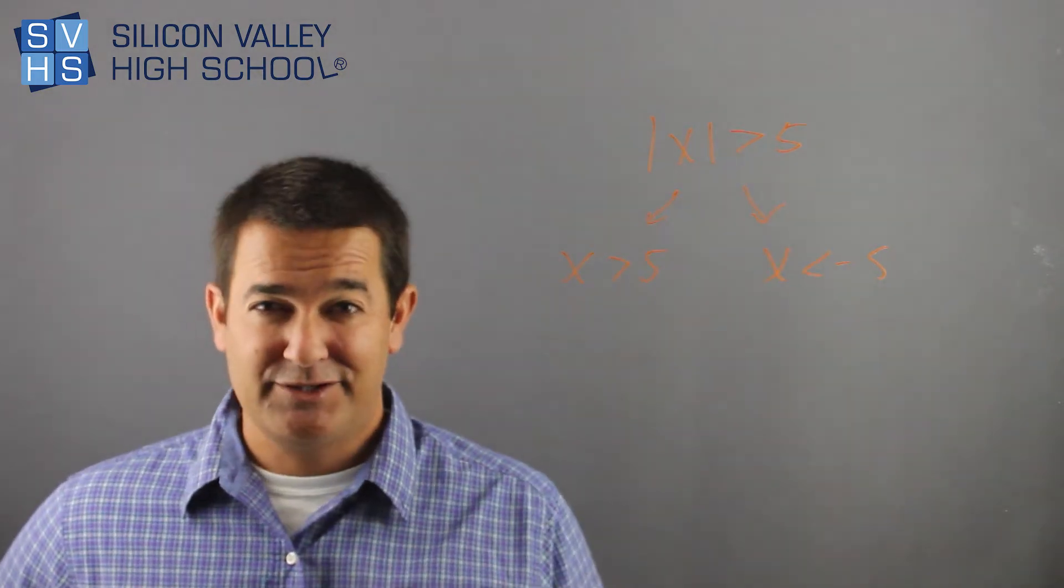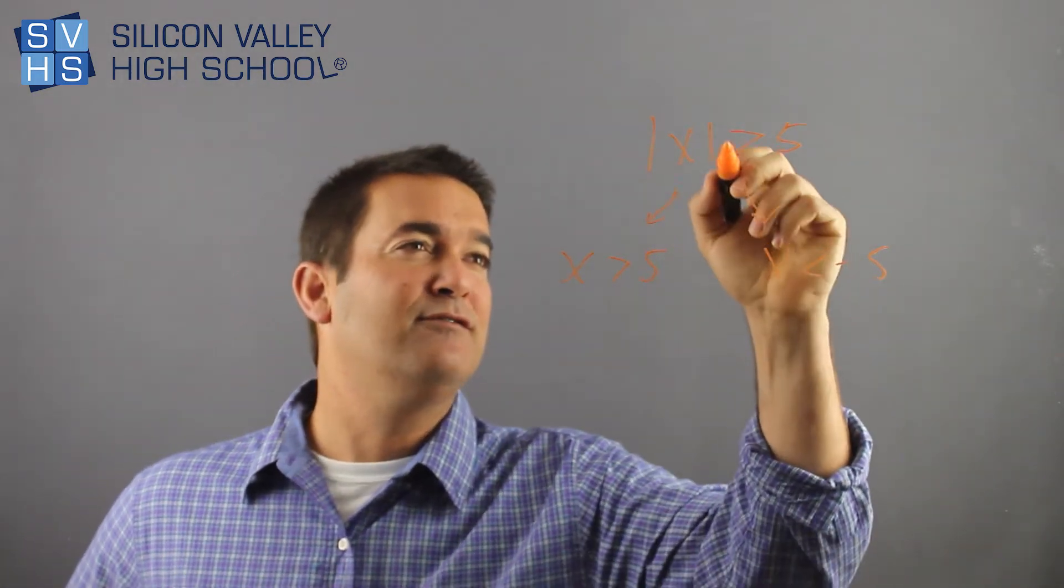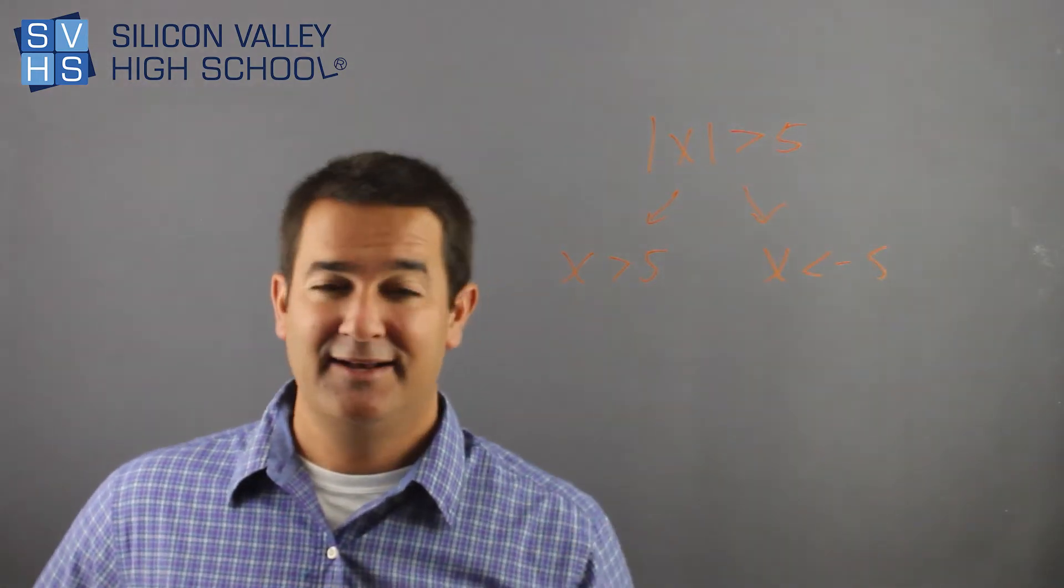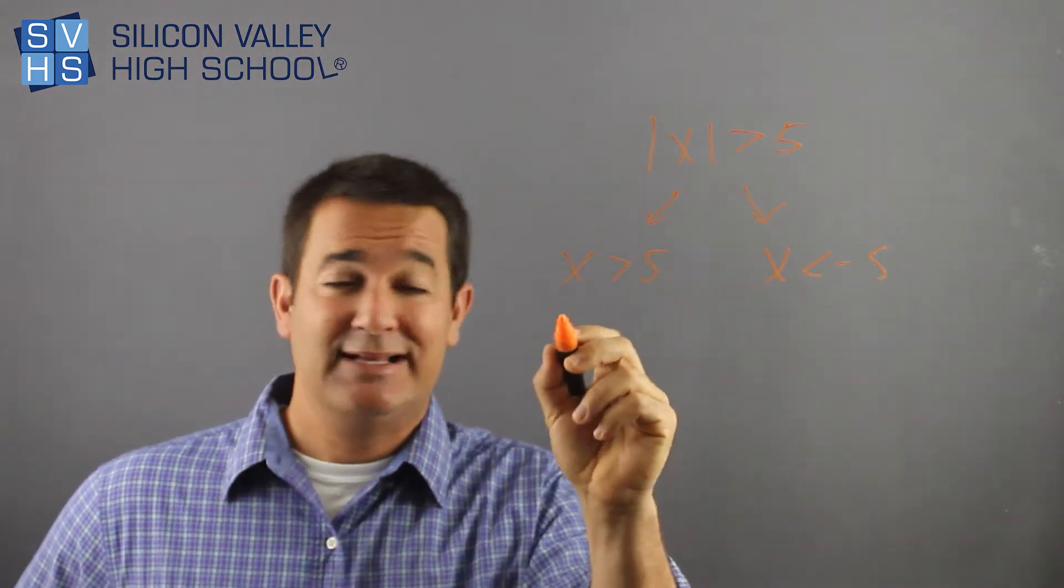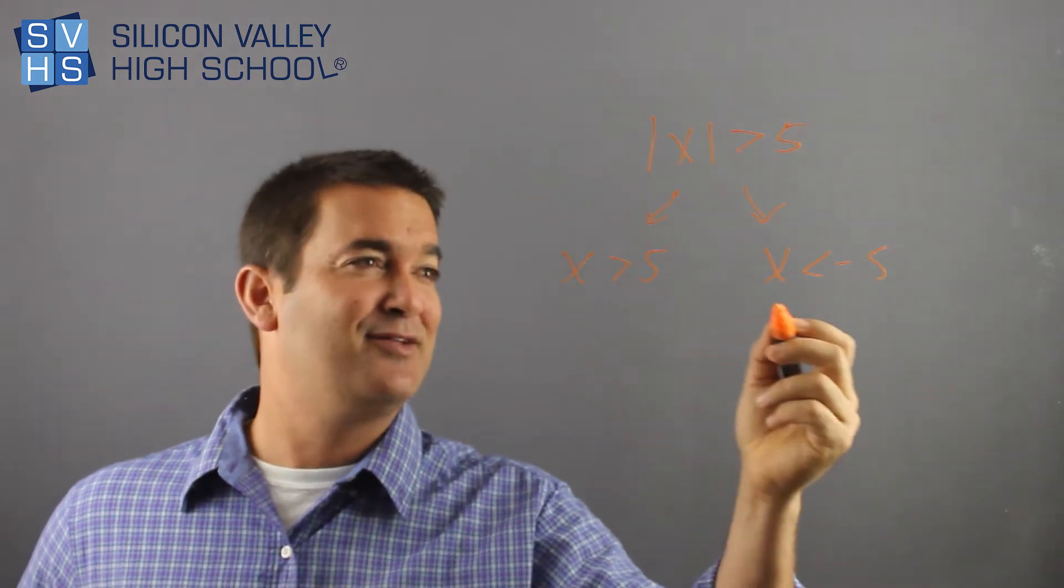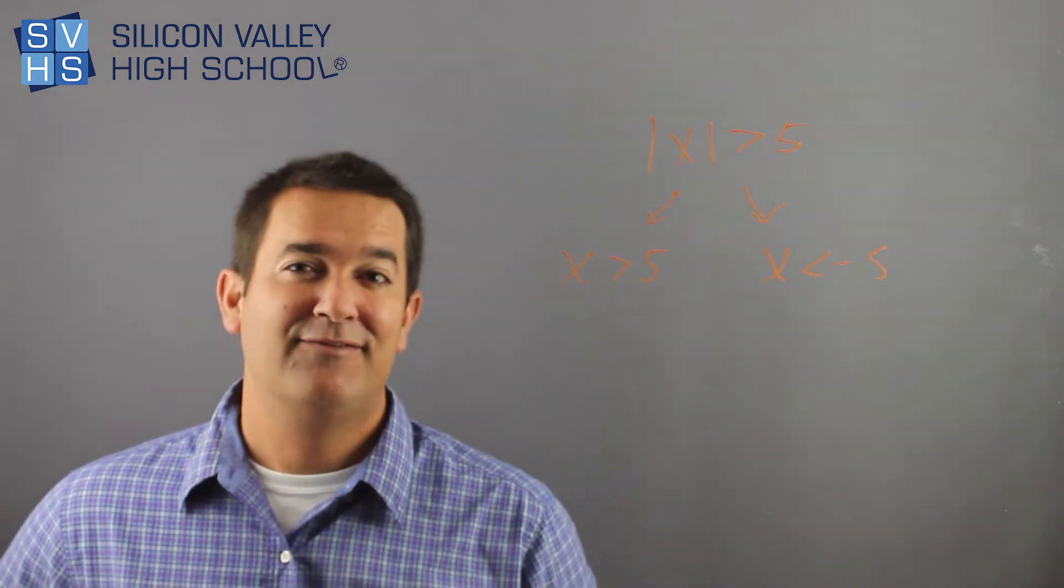One here, same as the original, identical. The one here, flip the sign, flip the sign. And now, in this case, you would continue on with your problem and solve it. We're done. X is greater than 5. X is less than negative 5. And remember, I talked about this in an earlier video.